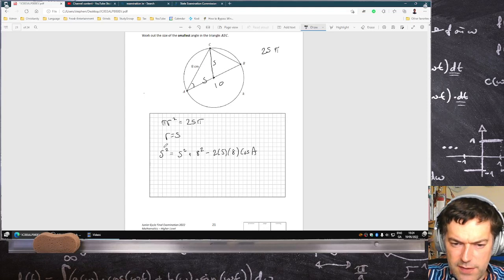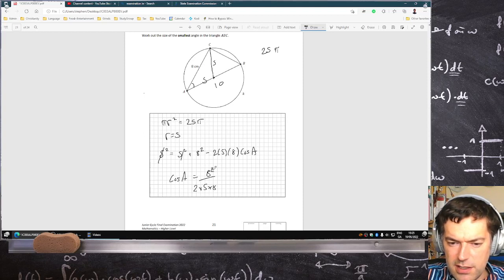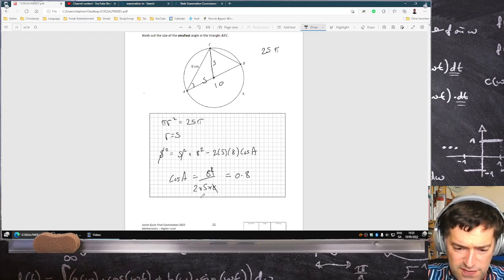So the 5² cancel and you'll get cos A equals 8² over 2 times 5 times 8, they cancel, so that's cos A equals 0.8, so cos inverse of 0.8.